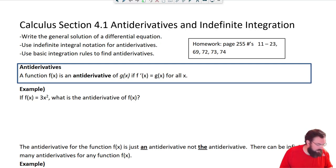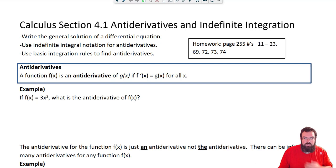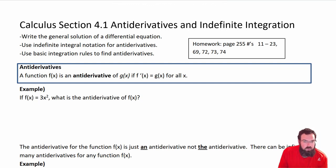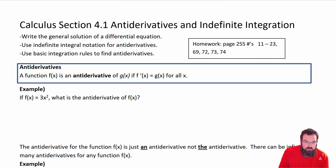What up ladies and gents. BC4-1: anti-derivatives and indefinite integration. We're going to start integration in this specific unit. Units 4 and the next couple are more integration. We're going to go through a lot of the different rules and things like that — Riemann sums and whatever.